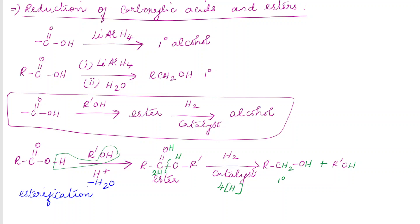So these are the two methods by which we can prepare alcohol: the reduction of aldehydes and ketones, and the reduction of carboxylic acids and esters. Carboxylic acids are first converted into esters, which are then catalytically hydrogenated to form primary alcohols. I hope this video is helpful for learning the preparation of alcohol. If you like this video, please like, comment, share, and subscribe to the channel for more videos. Thank you.